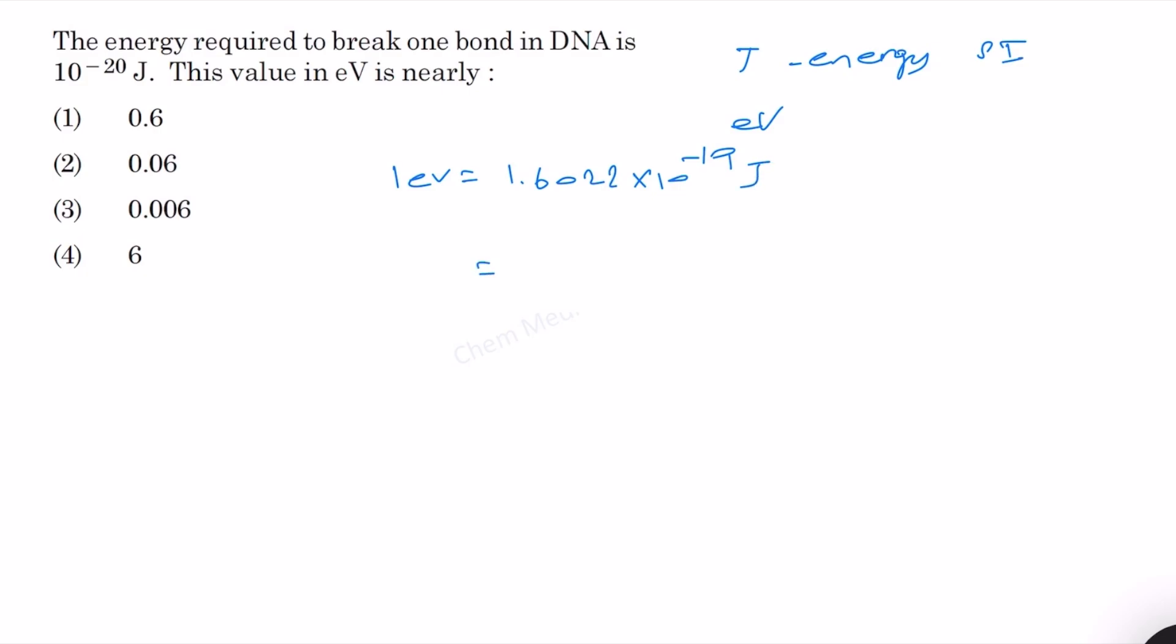Here what we have is 1 times 10 to the power minus 20 joules and that will be how much in electron volt. If we can cross multiply and divide, then we can find the answer.